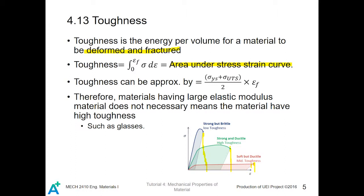Therefore, materials having large elastic modulus does not necessarily mean the material has high toughness. For example, glass. It has a very large elastic modulus because it is very hard to deform without breaking. But once it deforms, it breaks, and that means it will not have a very high toughness.